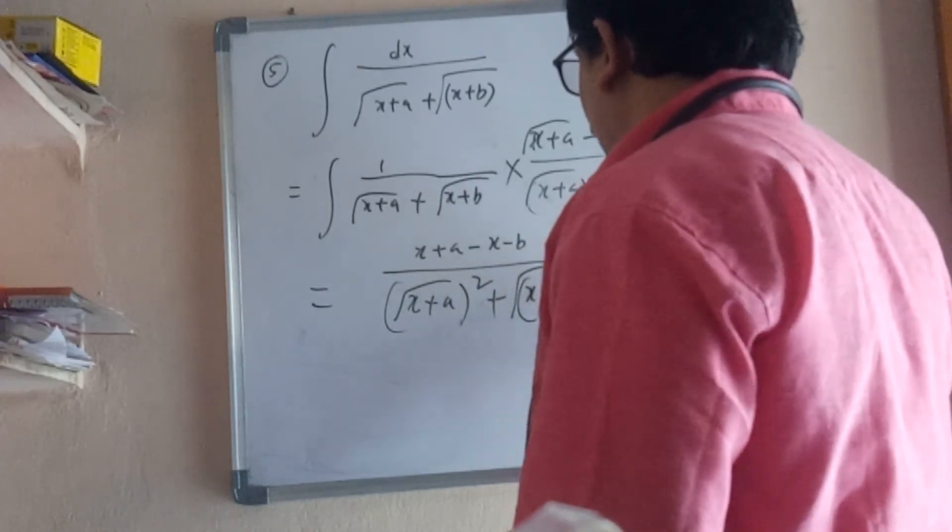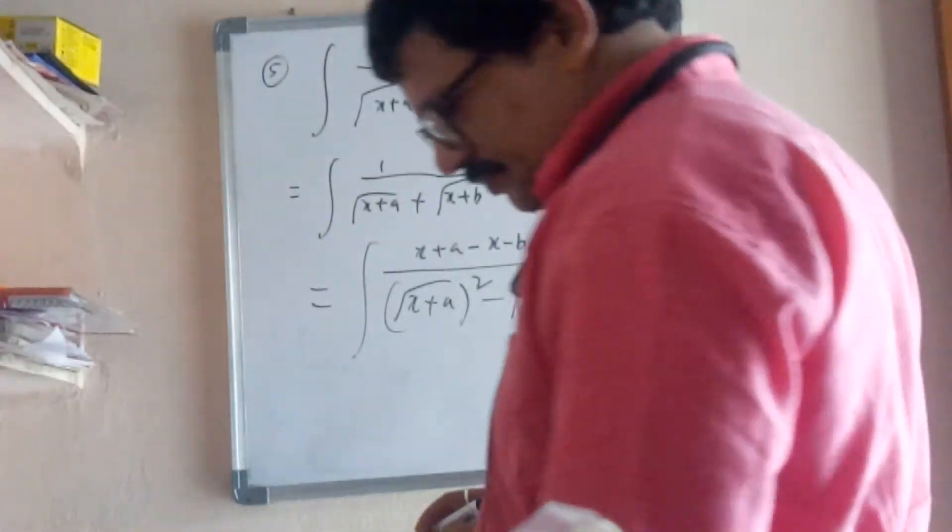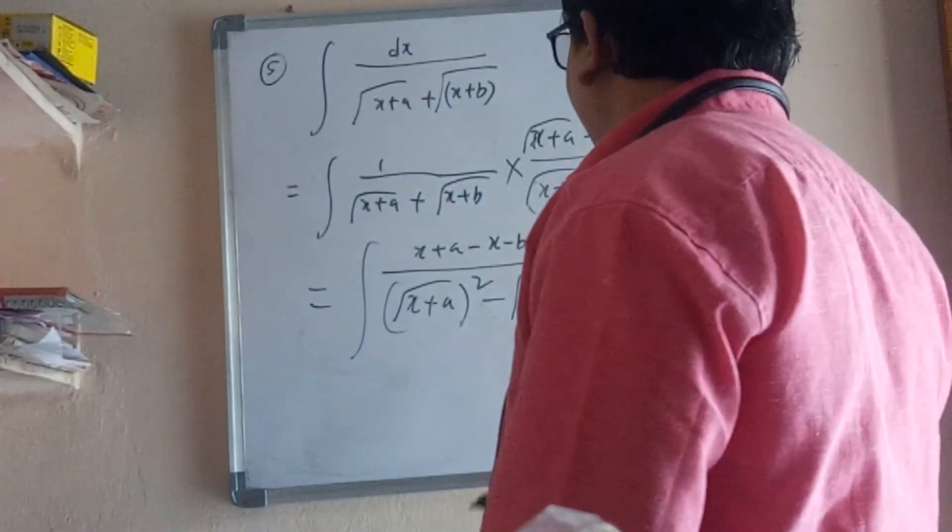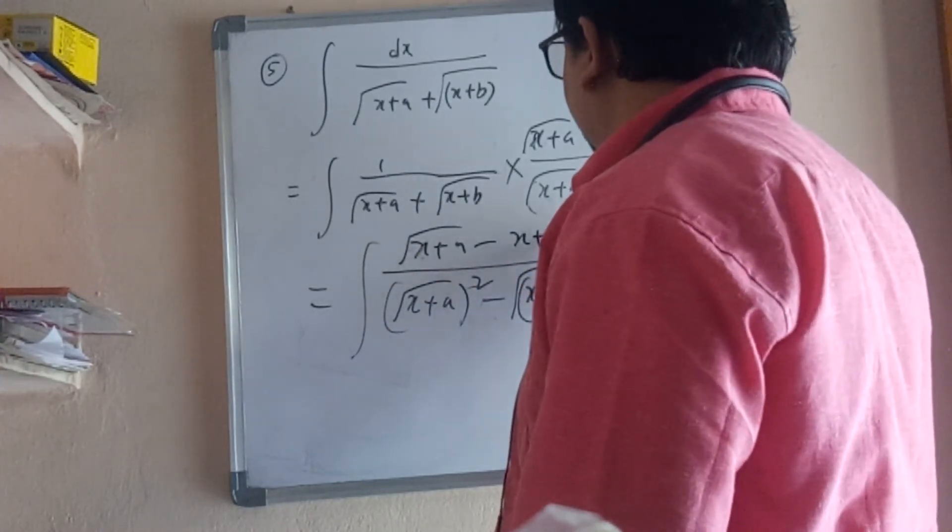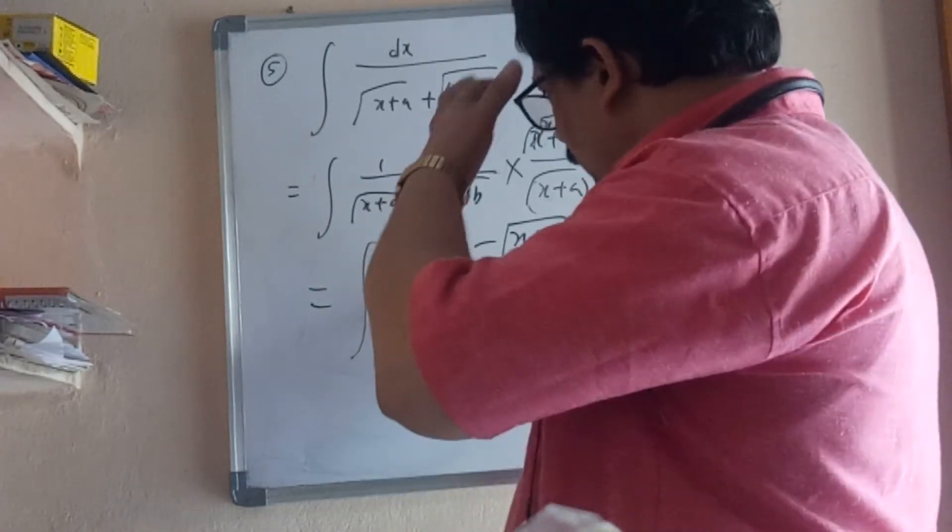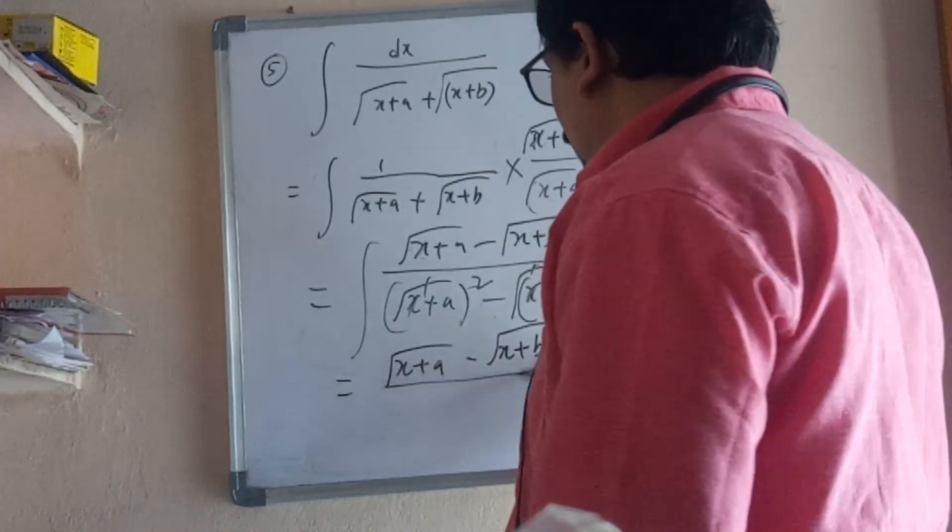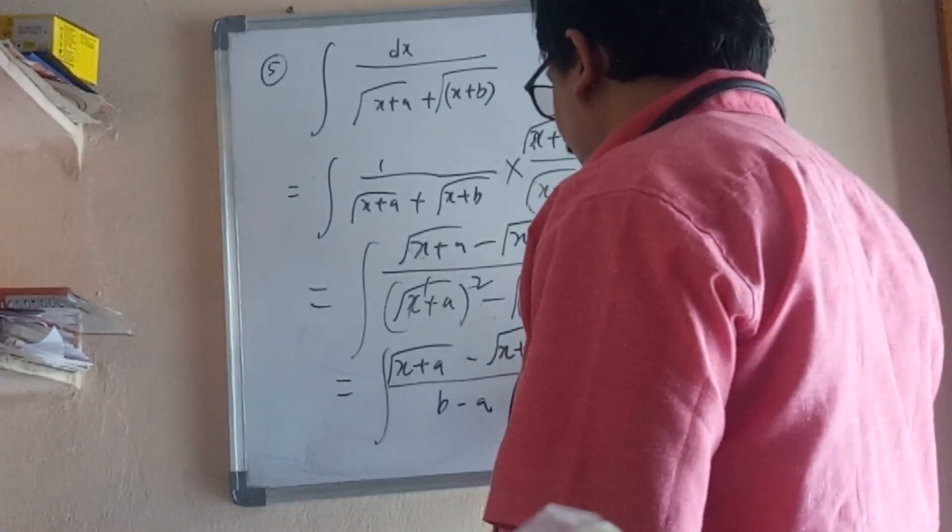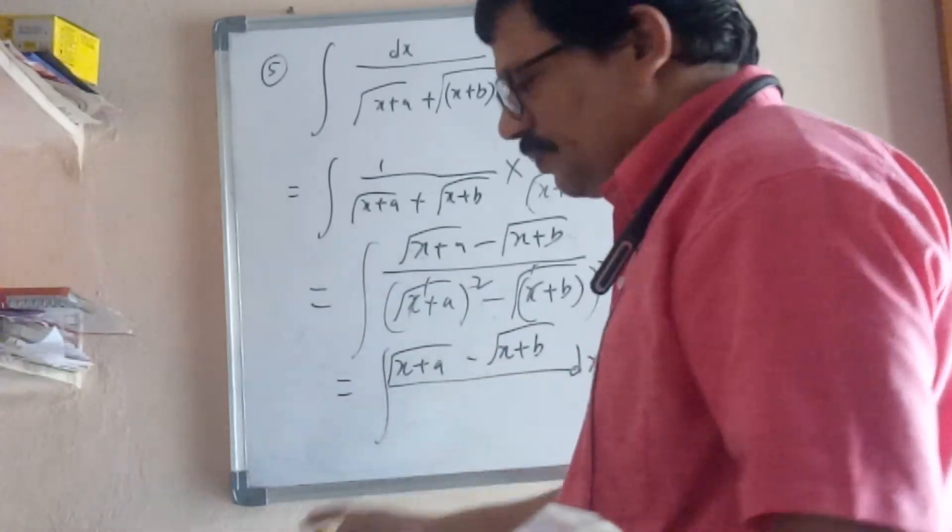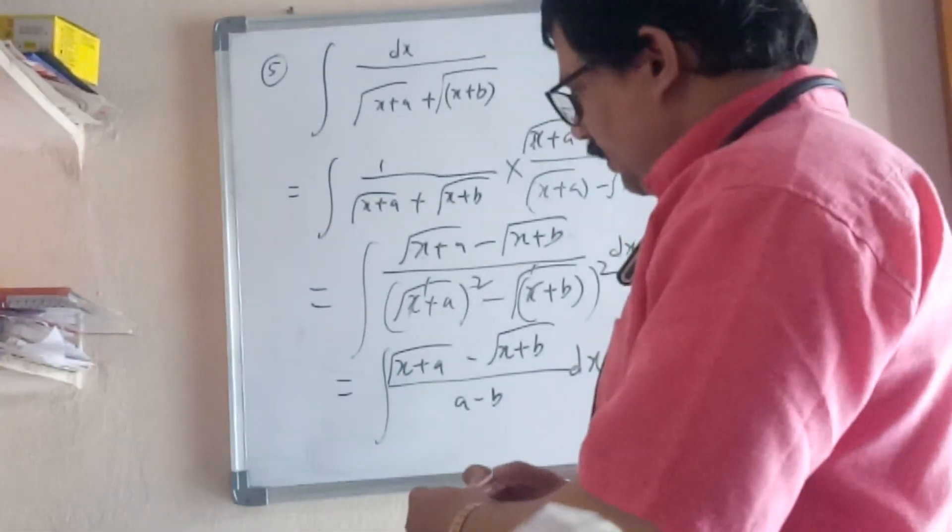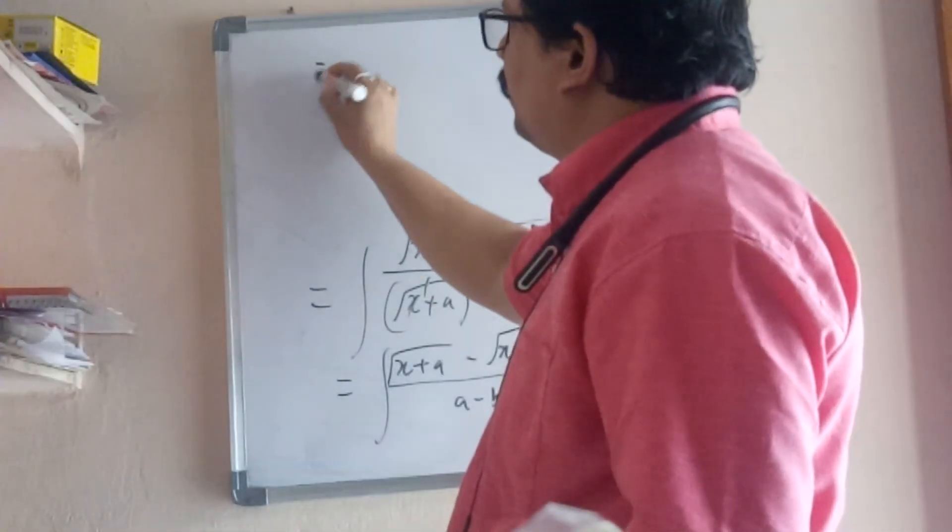Now x+a minus x+b in denominator: x and x cancel, leaving a minus b. Take (b-a) outside, which is 1/(a-b). The integral becomes 1/(a-b) times integral of (√(x+a) - √(x+b)) dx.